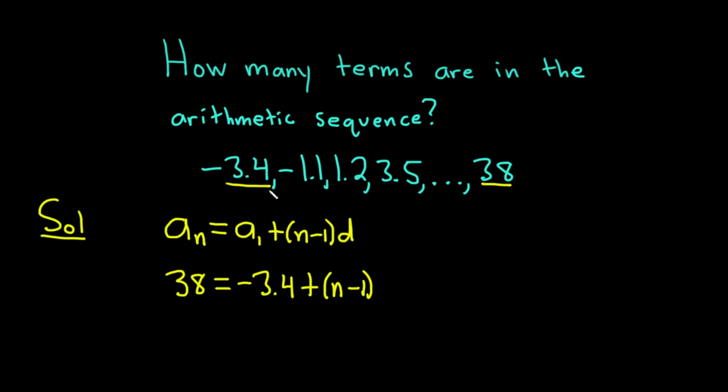So to get d, you have to ask yourself, what are you adding to negative 3.4 to get to negative 1.1? Looks like 2.3, right? If we add 2.3 to negative 3.4, we're going to get negative 1.1. Same thing here, if you take 2.3 and add it to negative 1.1, you're going to get 1.2. Same thing here. If you add 2.3 to 1.2, you're going to get 3.5. So it looks like we're adding 2.3 over and over again. So d is going to be 2.3.